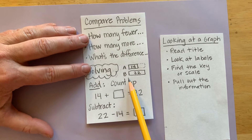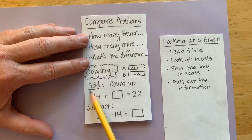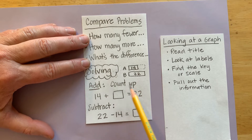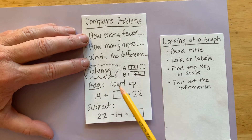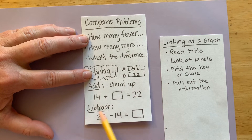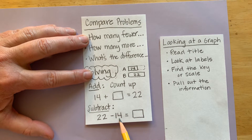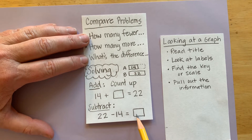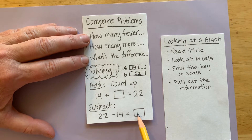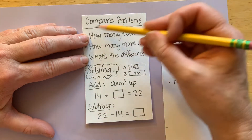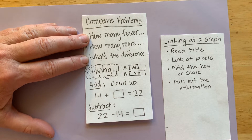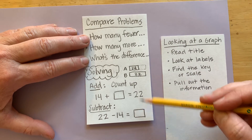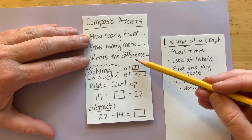You get to decide how you want to solve them. Some students like to add — you start with your smaller number, count up, and find your bigger number. Or you can subtract — take your larger number and subtract the smaller number to find the difference. It's up to you how you want to solve compare problems, as long as you have a strategy that works for you. This would be a good idea to put into your notebook so you can refer to it if you have a question.